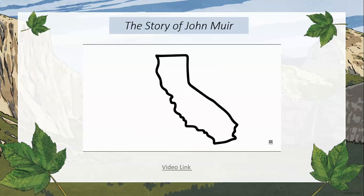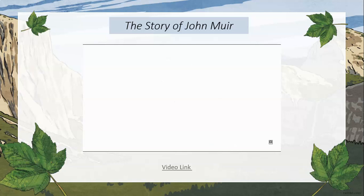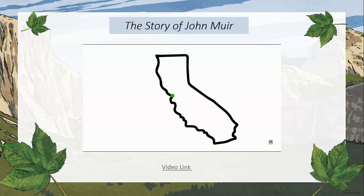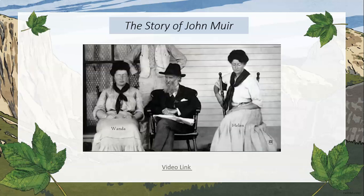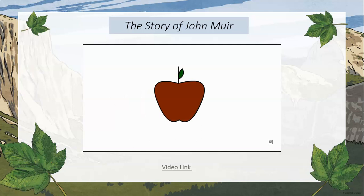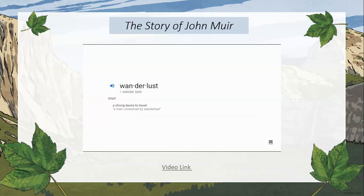Eventually he moved out of Yosemite to Oakland, California, and traveled to many places from there. In 1880, he married Louisa Wanda Strenzel and they moved to Martinez, California, where they had two daughters, Wanda and Helen. In his now fairly domestic life, he partnered with his father-in-law to manage a family fruit ranch.